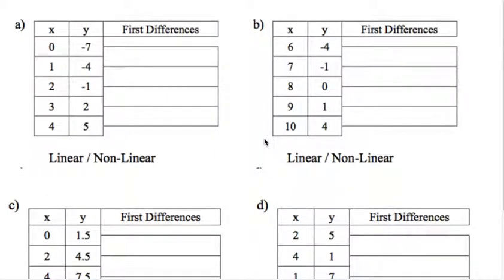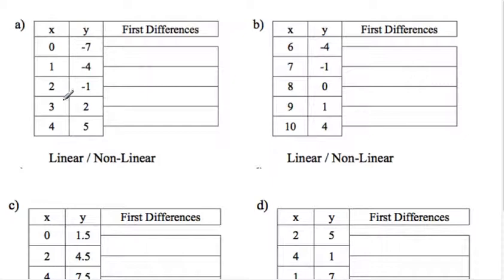Let's take up the last page of the investigation. Going over a couple things we should watch out for every time we look at a table of values and decide whether it's linear or nonlinear. After doing the investigation, you should have seen that we should always check the X column — make sure it goes up by the same number every time and does not skip any numbers. It needs to be in order, or it could decrease, but it must be in order and not skip.